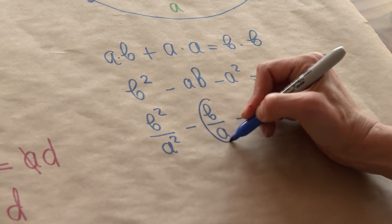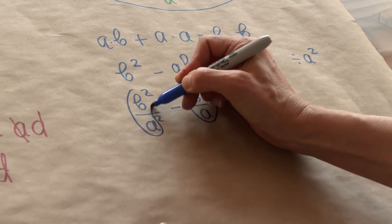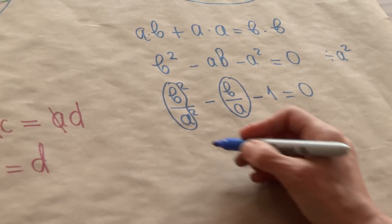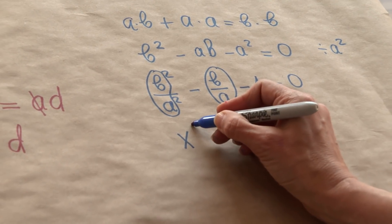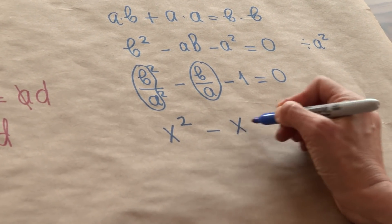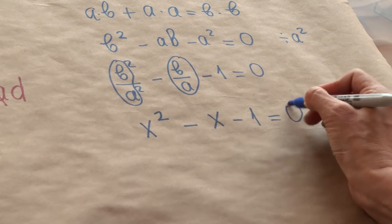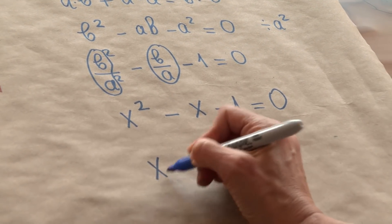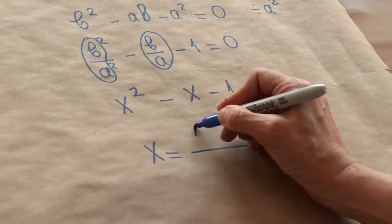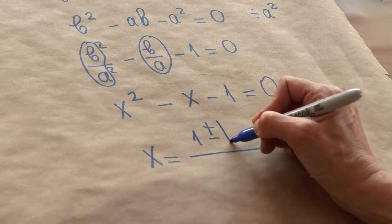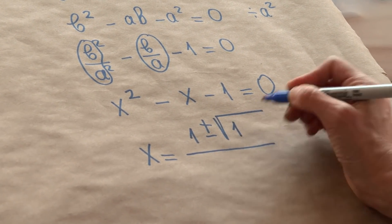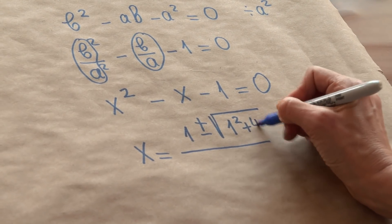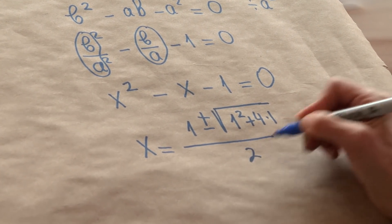Hmm, well here is the ratio that we were interested in, B over A. If I write this ratio as X, we end up with a quadratic equation, and when we solve it using the quadratic formula, we get 1 plus or minus 1 squared plus 4 times 1 divided by 2, or 1 plus or minus square root of 5 divided by 2.